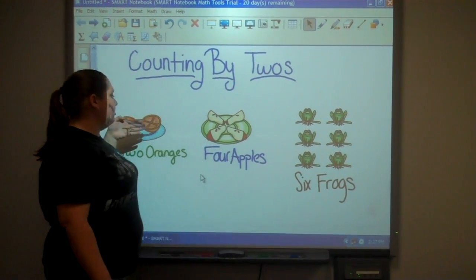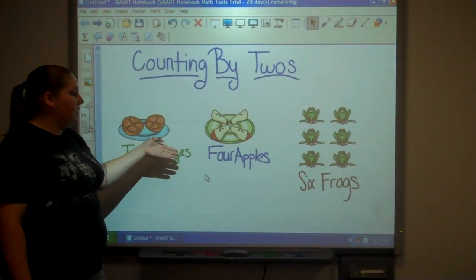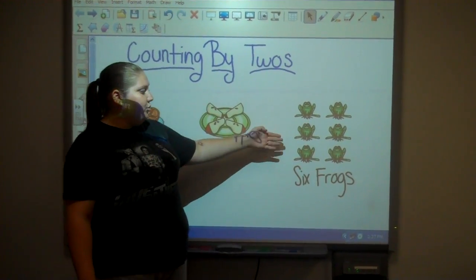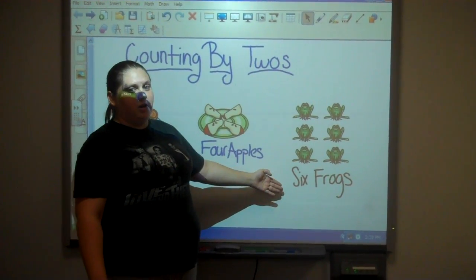So we had half of an orange which gave us two, four pieces of an apple so we added two more, and then moving on to the frogs we added two more, so now we have six frogs.